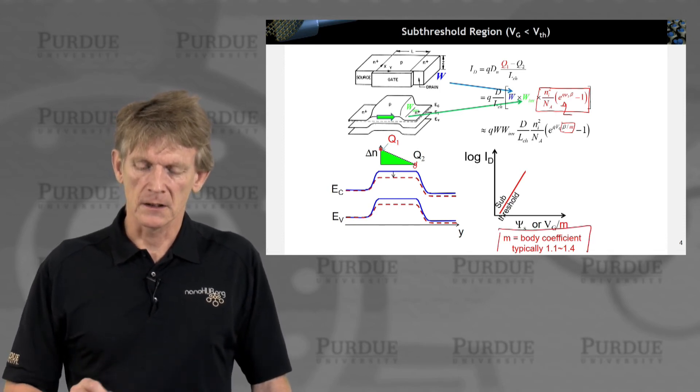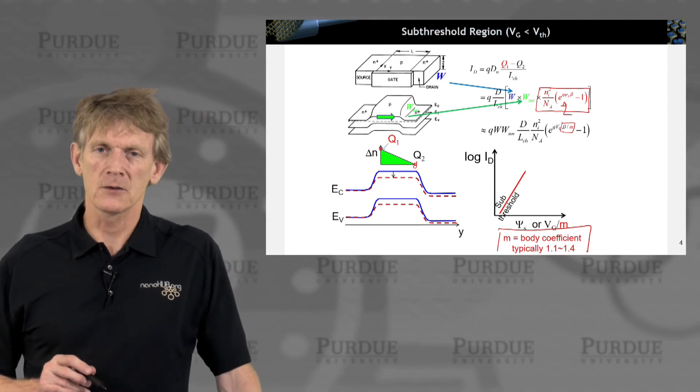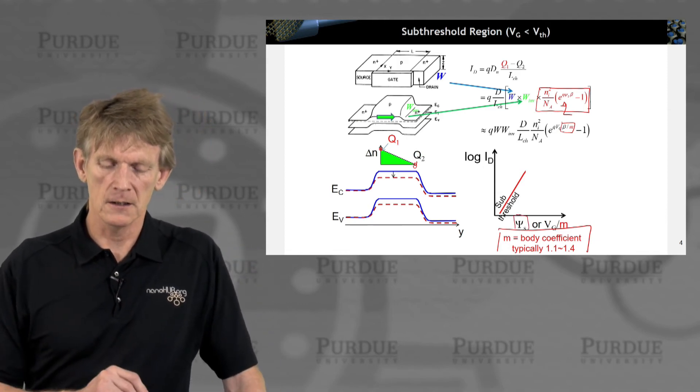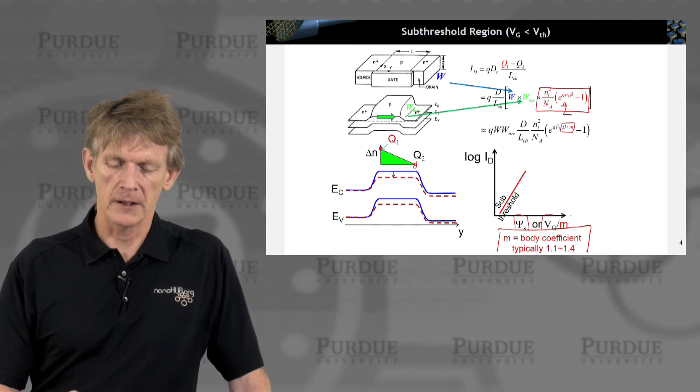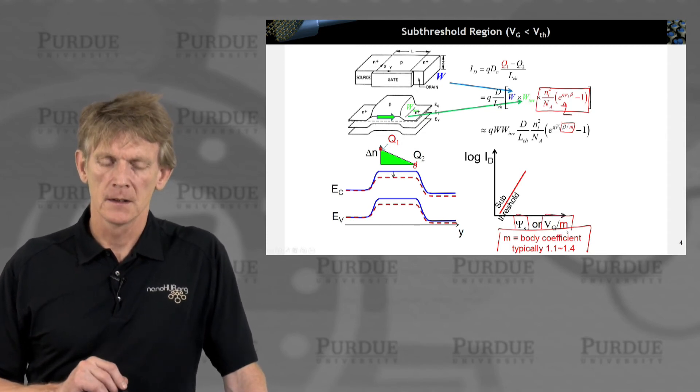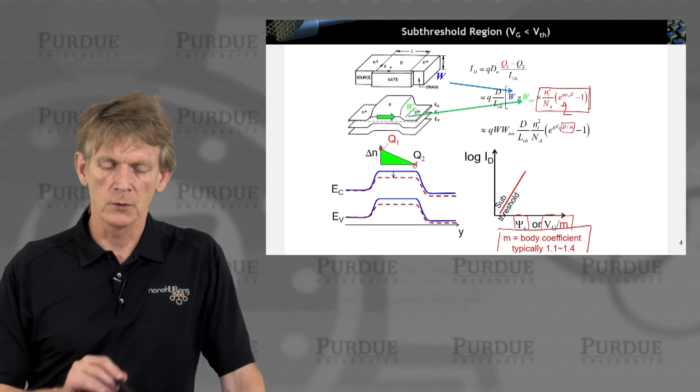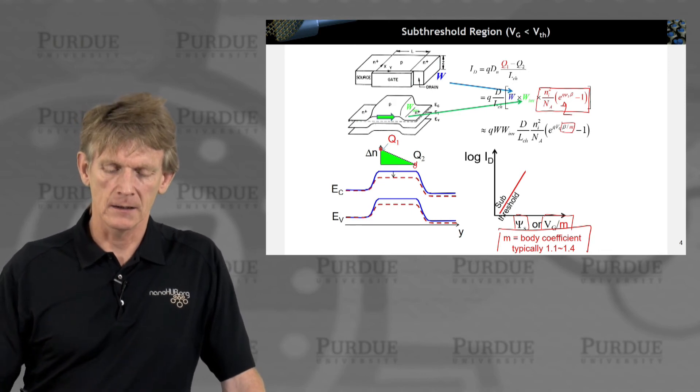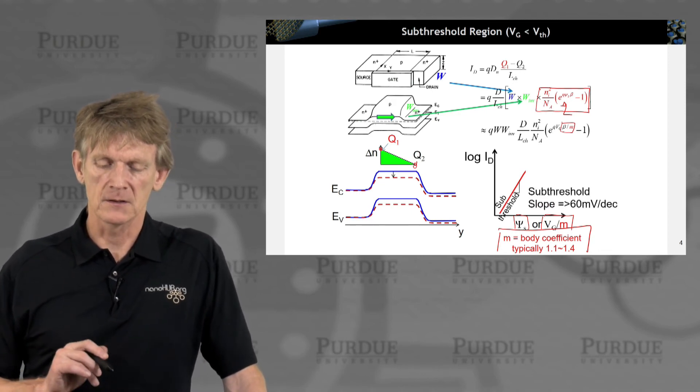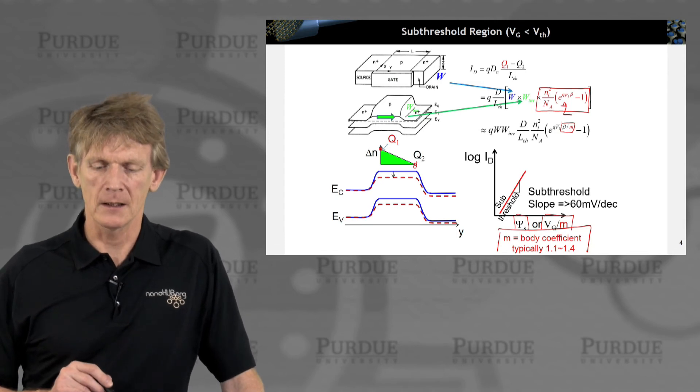So the gate voltage is not directly translated in the surface potential here, but it's modulated by the factor of m. But the sub-threshold slope is 60 millivolts per decade.